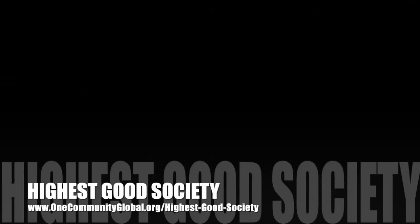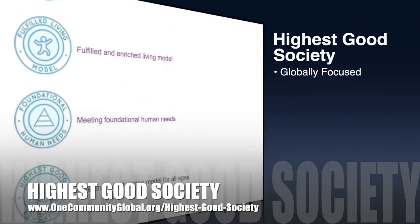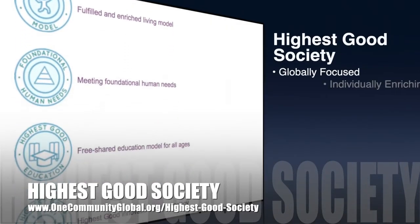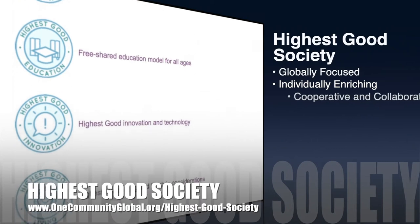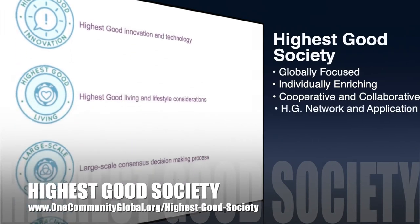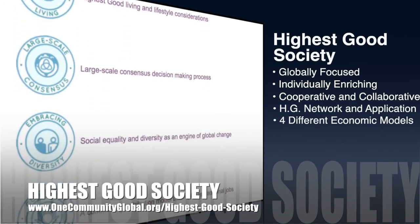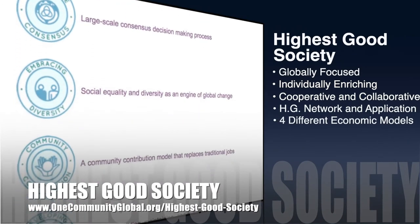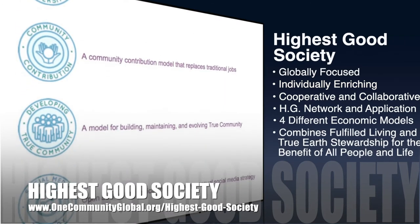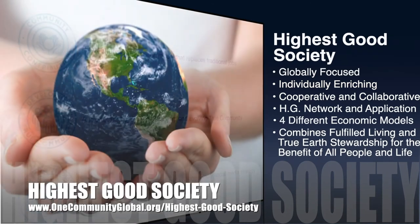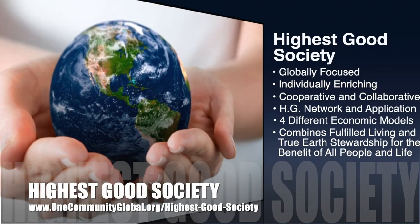The One Community approach to highest good society is globally focused, individually enriching, cooperative and collaborative. It includes a highest good network and application, four different economic models, and combines fulfilled living and true earth stewardship for the benefit of all people and all life on this planet.